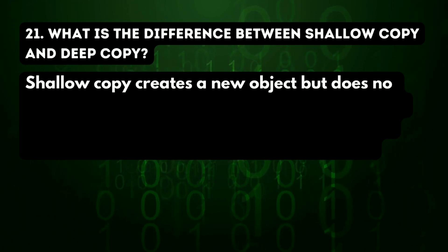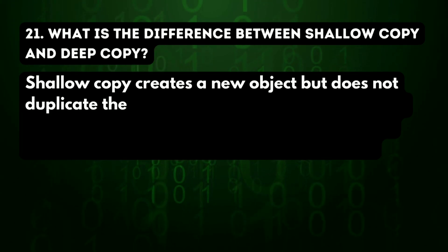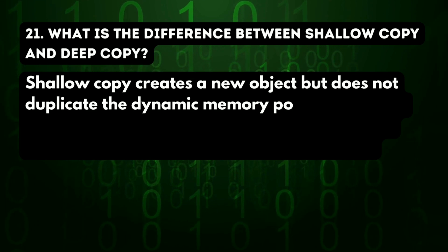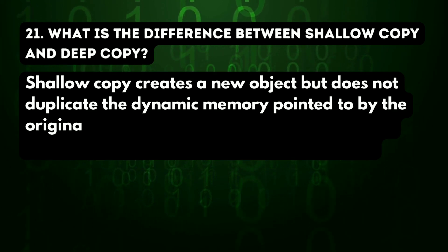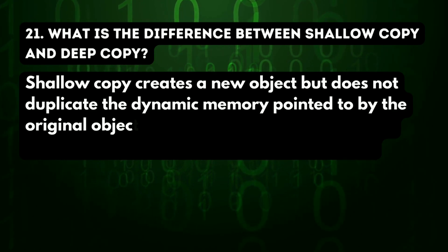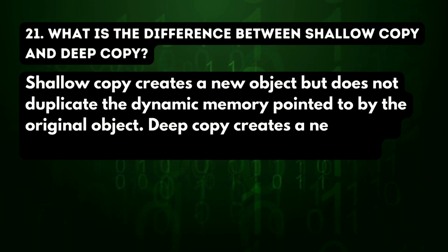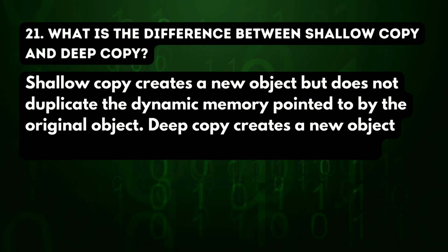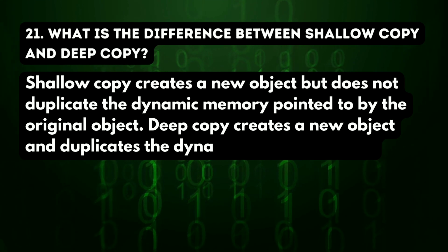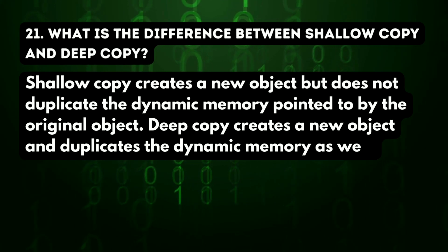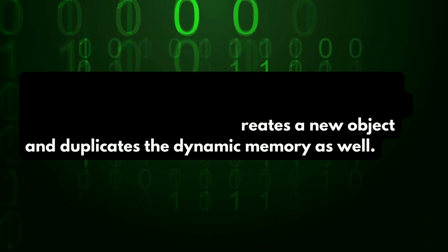21st question: what is the difference between shallow copy and deep copy? Shallow copy creates a new object but does not duplicate the dynamic memory pointed to by the original object. Deep copy creates a new object and duplicates the dynamic memory as well.